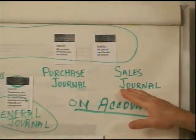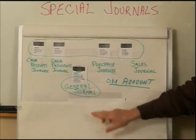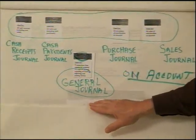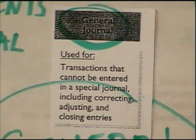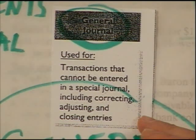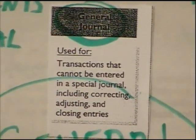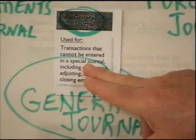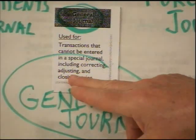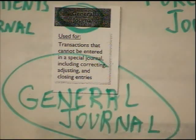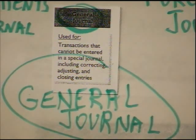That covers the four special journals. The last journal is the General Journal, which is essentially a catch-all. If you do not have cash receipts, cash payments, a purchase on account, or a sales on account, use the General Journal. It's used for a number of things: number one, correcting entries — if you misclassified something, you don't go back and correct it in that journal, you make a correcting entry here. It's also for the four closing entries we learned. And it also covers sales returns and allowances, which would be recorded here.